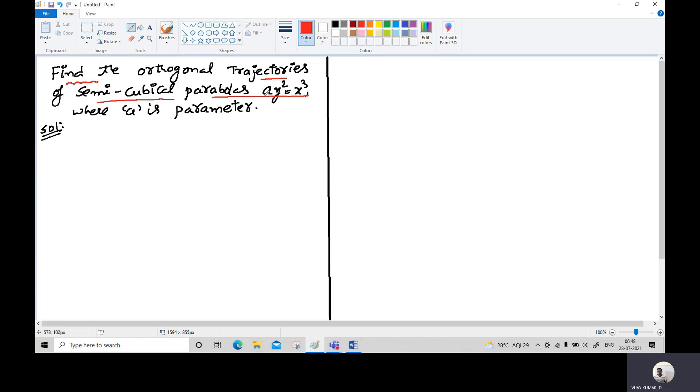This means that by giving different values for a, you will get various semi-cubical parabolas in that family.